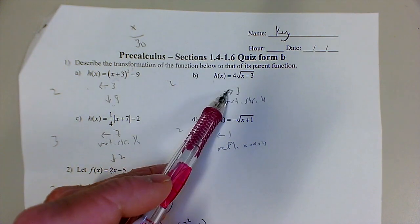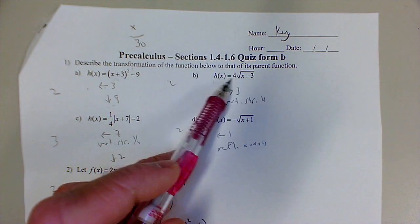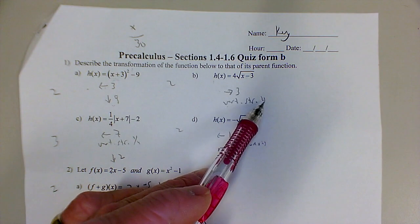Similarly, the x minus 3 causes it to shift right 3. This is a vertical stretch, factor 4.